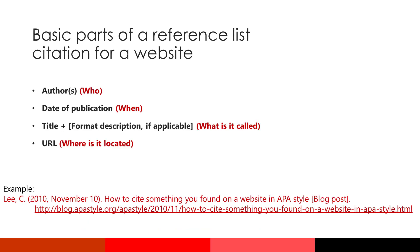A basic reference list entry for a website is even simpler than that for a journal article or a book. You start with the author or authors and the date of publication on the web, and then you provide the title of the article, story, or post you are citing. You can include a description of the format of the information it is in, if that would be helpful to your readers. Then you just add the URL, which tells the reader where the source is located on the web, and you're done.